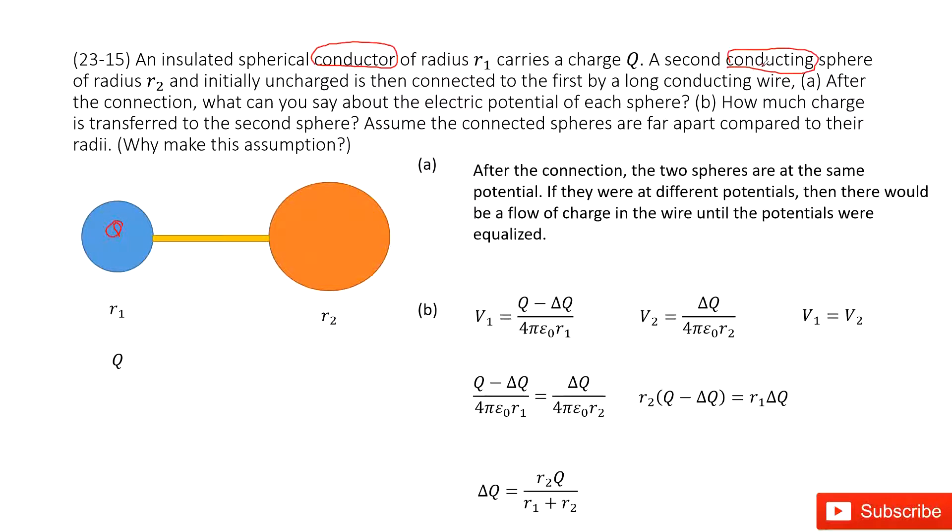Then we have the second conducting spherical object - another keyword: conducting. The charge moves freely and is also distributed on the surface. The radius is R₂, and initially there is no charge on the second object.